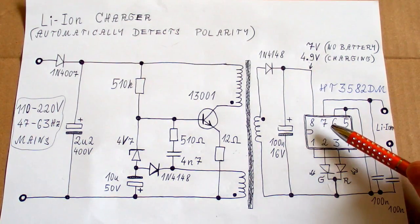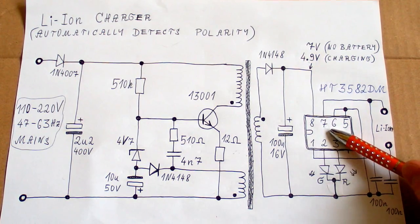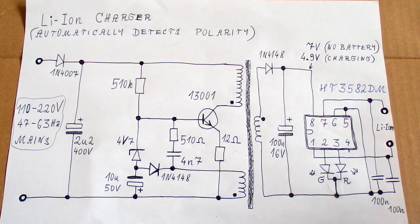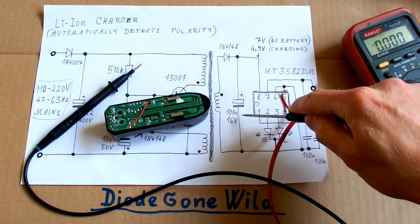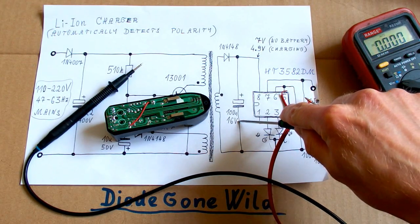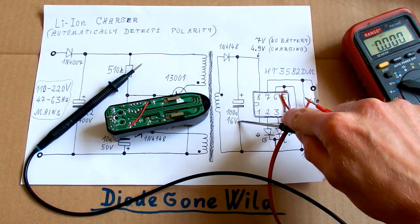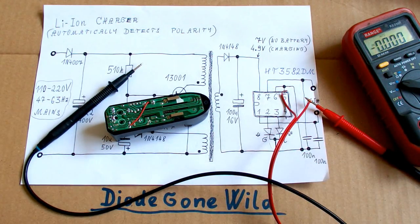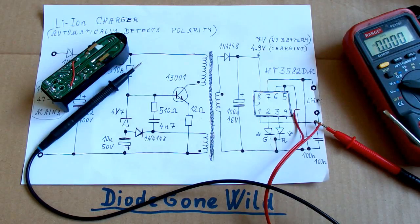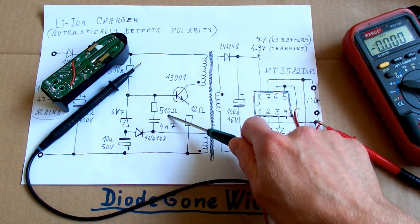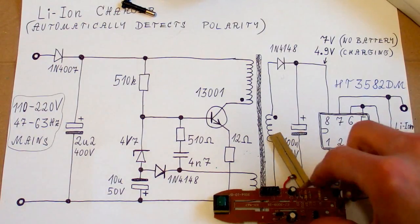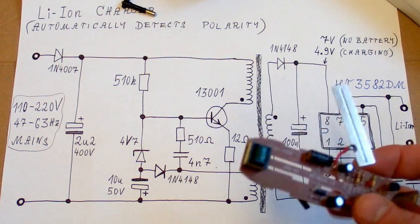So it's possible that this switching power supply is actually what limits the current and this chip only turns it on or off and swaps the polarity. If this chip was limiting the current, it would have to work as a linear regulator, so it would get quite hot. I was trying to stick a bench power supply to this capacitor and it draws about 0.5 amps and after a while a thermal protection kicks in. So it seems that this chip relies on the current limit of this switching power supply.